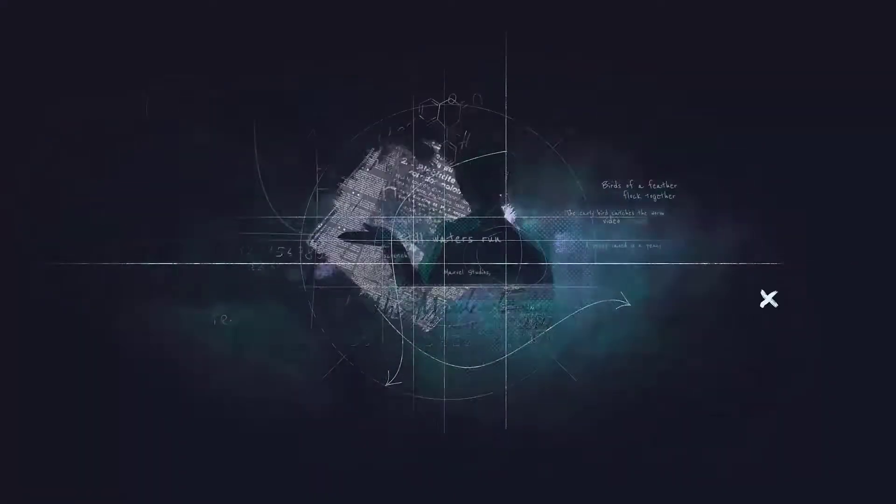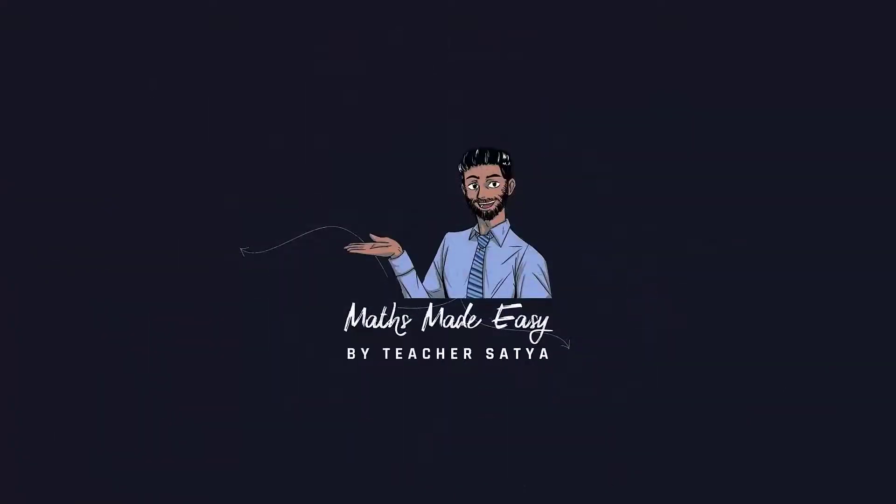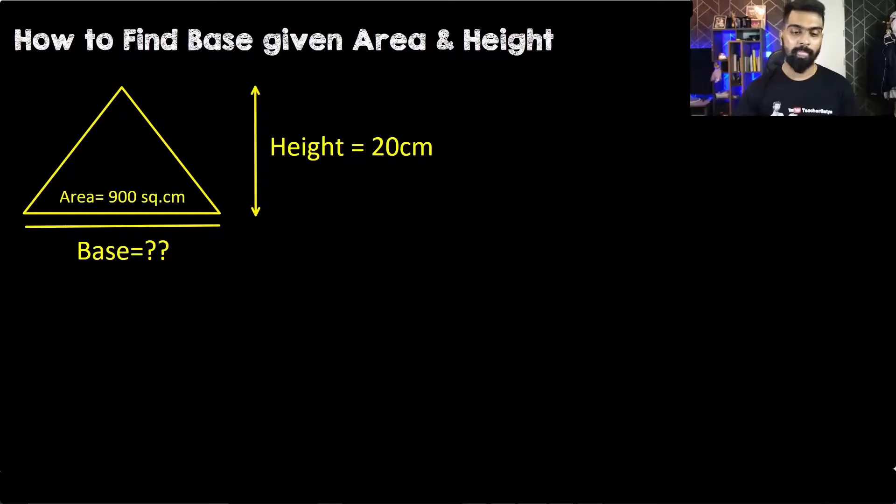First, we'll be writing the formula to find the area of a triangle. If you remember, the area of a triangle is base times its height divided by 2.